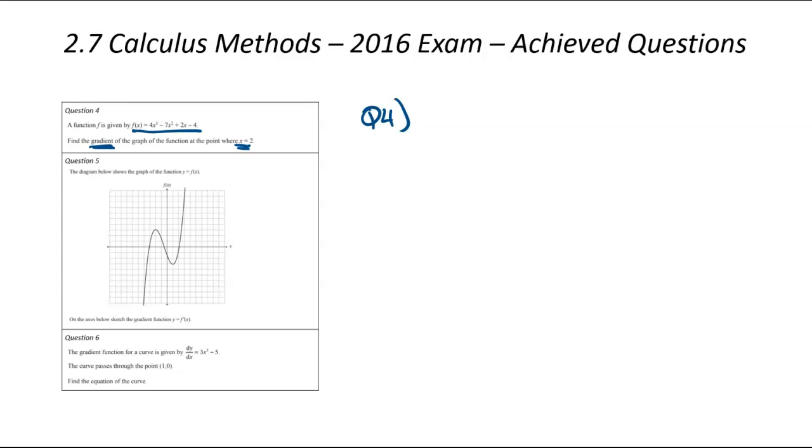And this is really about differentiating, substituting, and then evaluating that final number. So let's get down our original function which we need to differentiate. So f(x) is equal to 4x cubed minus 7x squared plus 2x minus 4. That's our original equation.